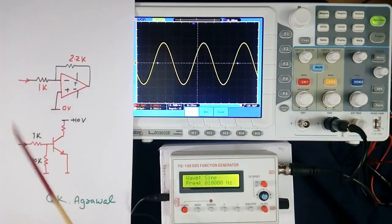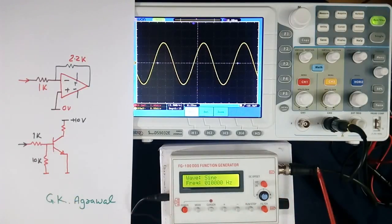Effect of this load depends upon the output current rating of function generator. Some function generator may have more current output, some may have less. So effect may be less, more or it may be zero. So better to connect the load here.